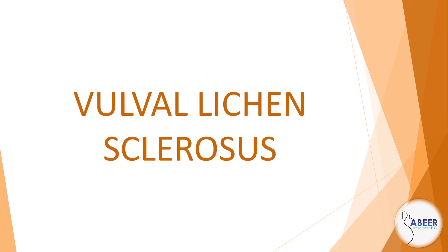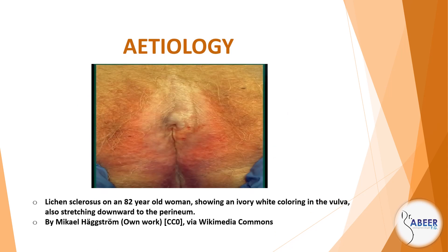Vulval lichen sclerosus. Etiology: Lichen sclerosus, or LS, is an inflammatory dermatosis of unknown etiology. There is evidence to suggest that autoimmune factors may be involved in its pathogenesis, and recent evidence has shown autoantibodies to extracellular matrix protein 1. There is an increased frequency of other autoimmune disorders in females with lichen sclerosus.